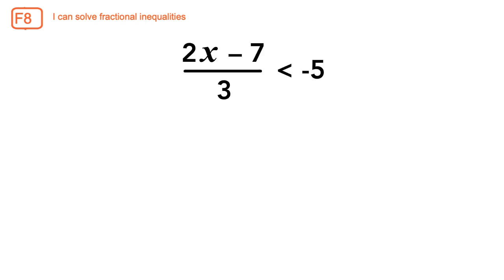Another example: how would you solve this inequality? Going through the same process, multiply both sides by 3 to give us 2x minus 7 less than negative 15. Then add 7 to both sides to give us 2x is less than negative 8.